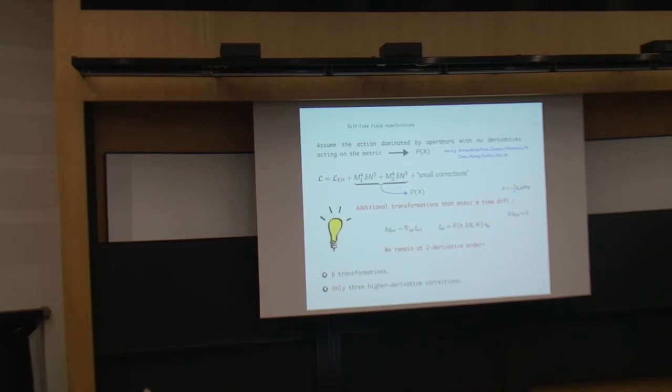Then we considered a slightly different setup. So, always in the context of the effective field theory, we assumed a derivative expansion. So, in this situation, the dominant operators are the ones with no derivatives acting on the metric. So, this means that the dominant operators are the ones that we can construct with the G00 component of the metric. So, this is nothing but a P(X) Lagrangian, being X the kinetic term of the inflaton.